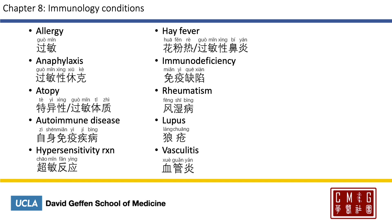We've already said allergen is 过敏源, so allergy is 过敏. Anaphylaxis is 过敏性休克; we have a note on that later. Atopy is 特异性 or 过敏体质. Autoimmune disease is 自身免疫疾病. Hypersensitivity reaction is 超敏反应. Hay fever is 花粉热 or 过敏性鼻炎. Immunodeficiency is 免疫缺陷. Rheumatism is 风湿病; the translation is likely drawing from Chinese medicine concepts. Lupus is 狼疮. Vasculitis is 血管炎.